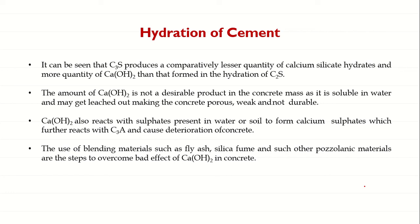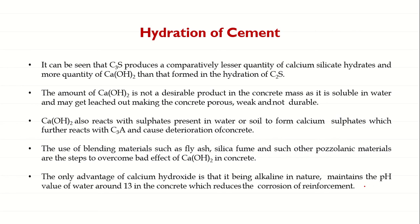That is the reason we try to suppress calcium hydroxide by addition of fly ash, silica fume, or other pozzolanic materials to avoid its bad effects in concrete. If calcium hydroxide is not suppressed, it will react with sulfates present in water and form calcium sulfate, which further reacts with tricalcium aluminate, finally causing decay or deterioration of concrete. The only advantage of calcium hydroxide is that since it is alkaline, it maintains the pH of water around 13 in the concrete, which reduces the effect of reinforcement corrosion.